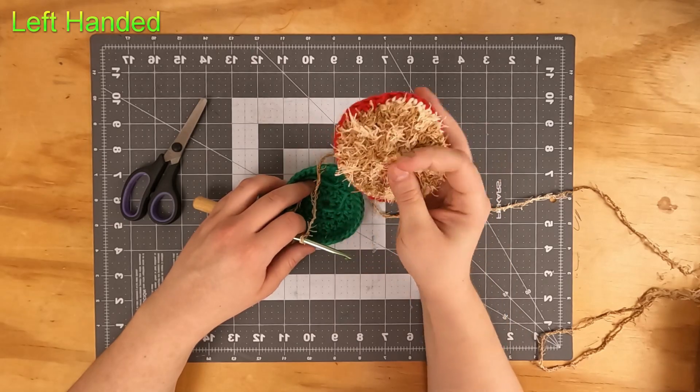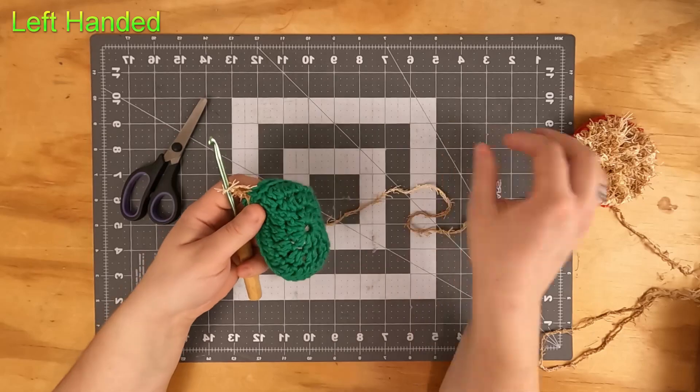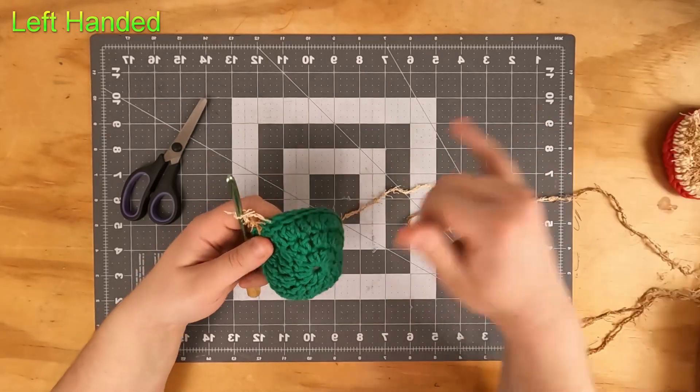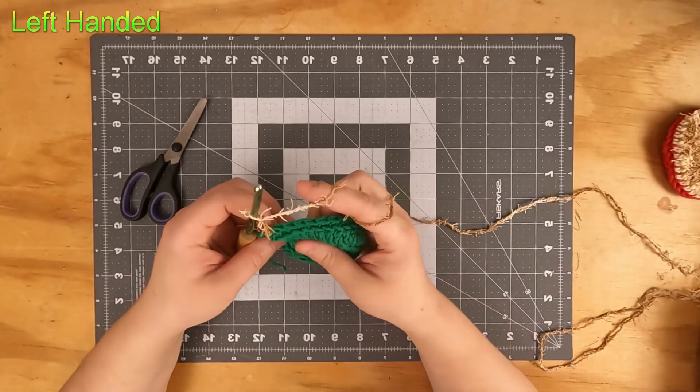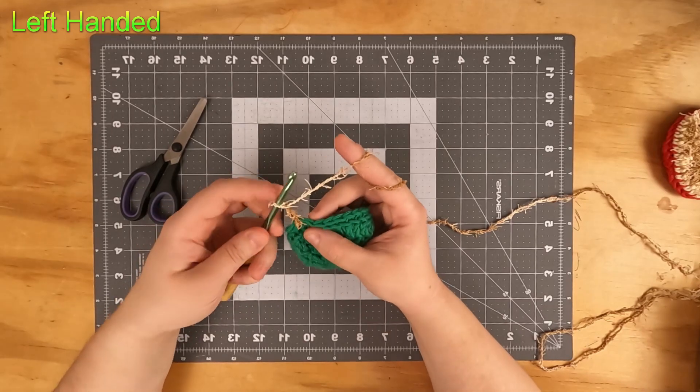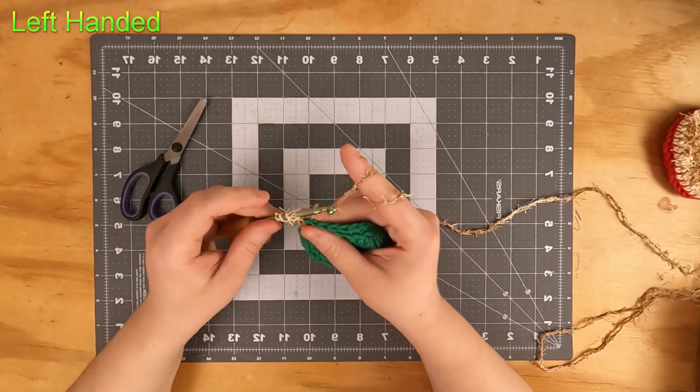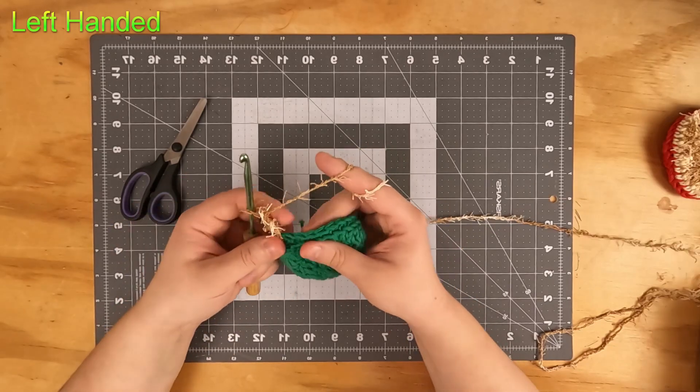We're going to start decreasing to make the back side of the scrubby. For the back side there's actually only two rounds, even though it took three rounds to get it to this size. I found that two rounds brings it down really well. For this first round of the back side, we will be doing a double crochet in the stitch that we're already in and then a double crochet decrease over these next two stitches here.